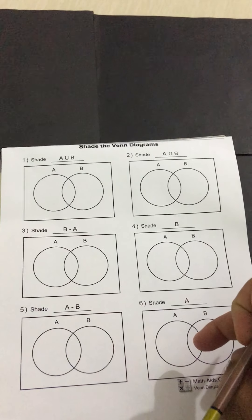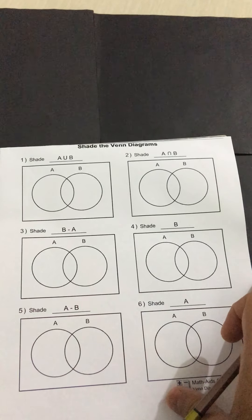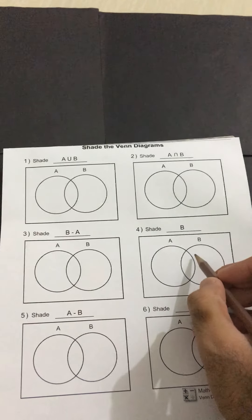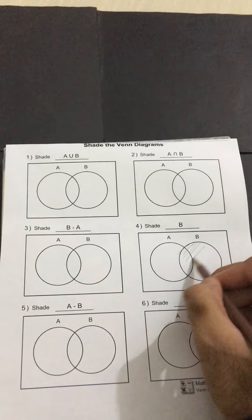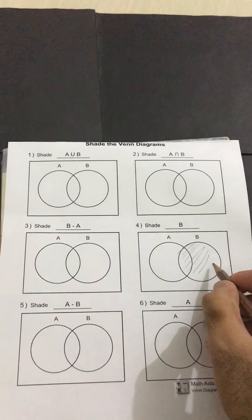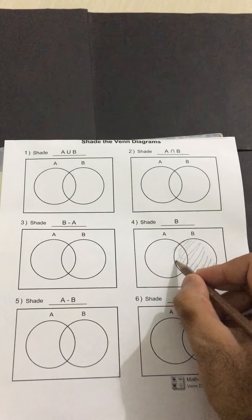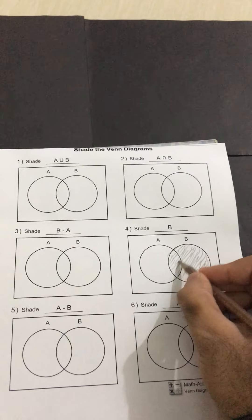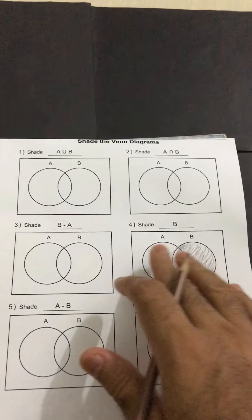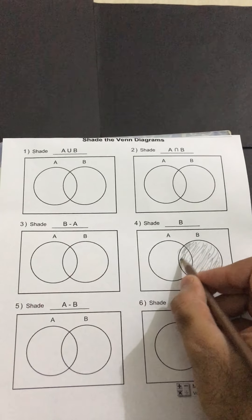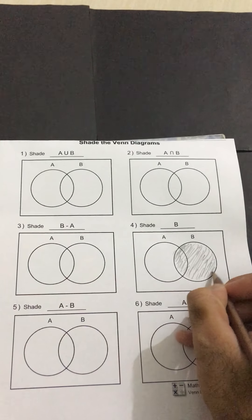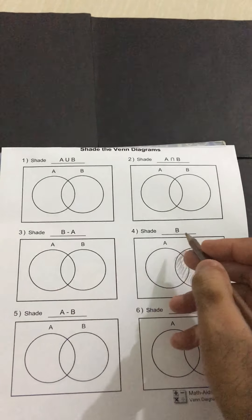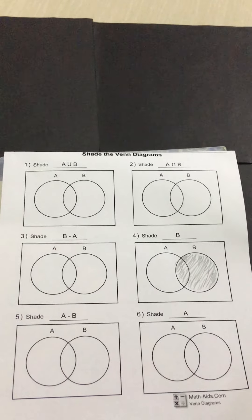I will start with the fourth and sixth parts because these two are very easy. In the fourth part, we have to shade the complete set B, so I will just shade it like this so you can see I am highlighting this area. This is the required region. In a Venn diagram, sets are represented by circles, so A and B are our sets, and we just have to shade B.